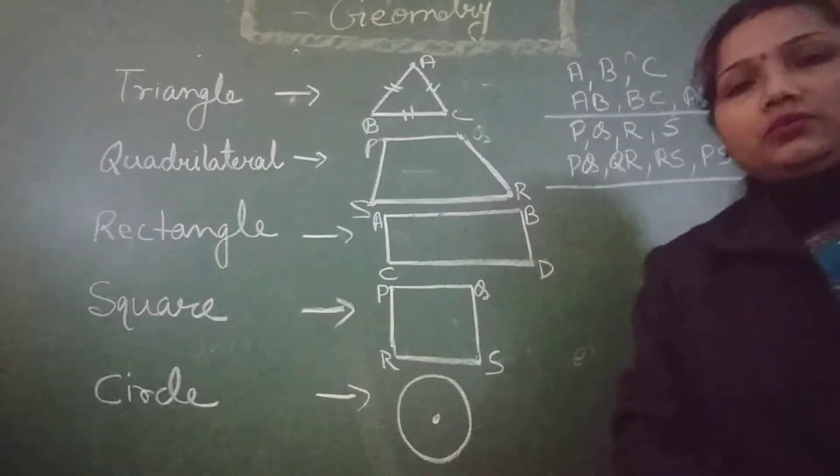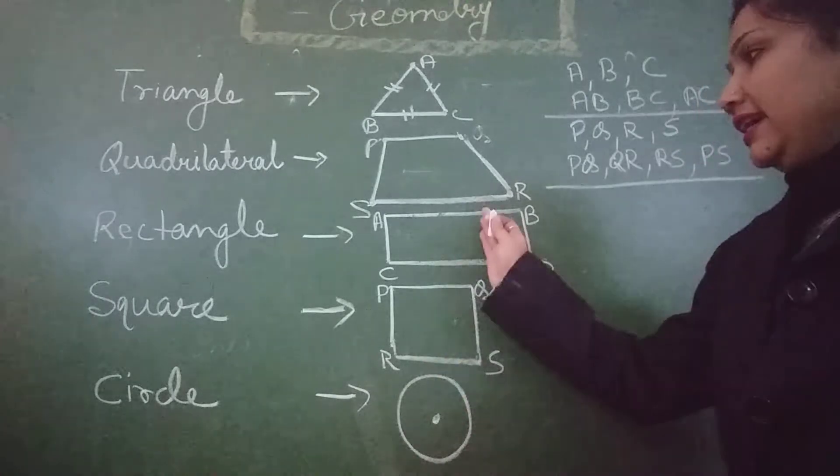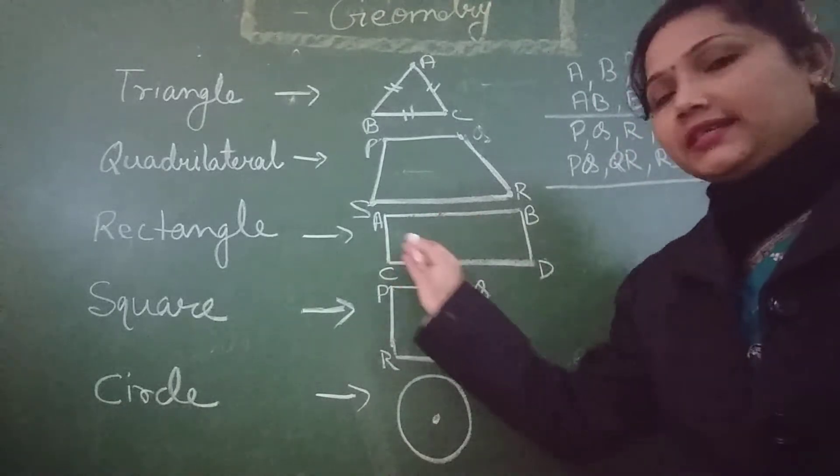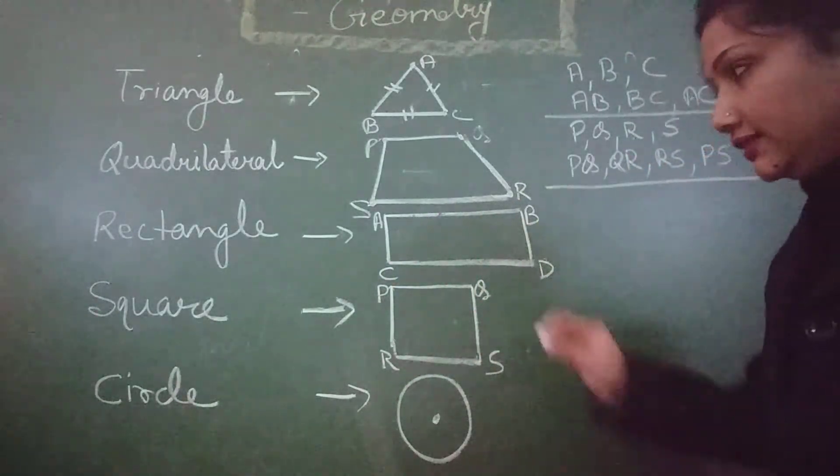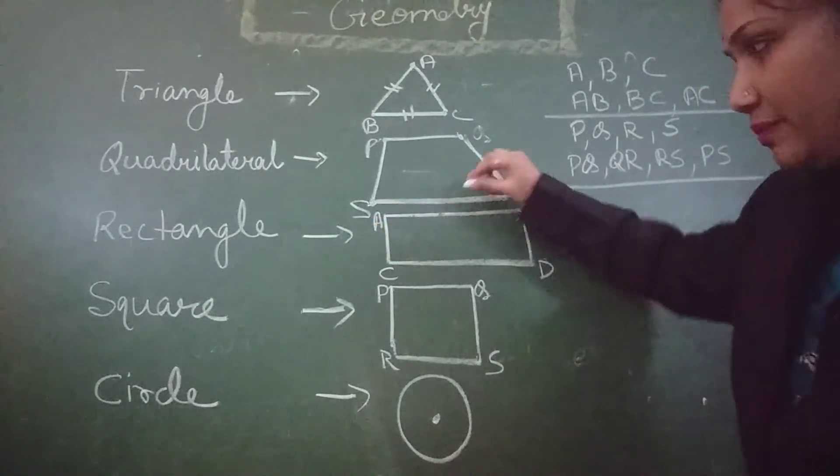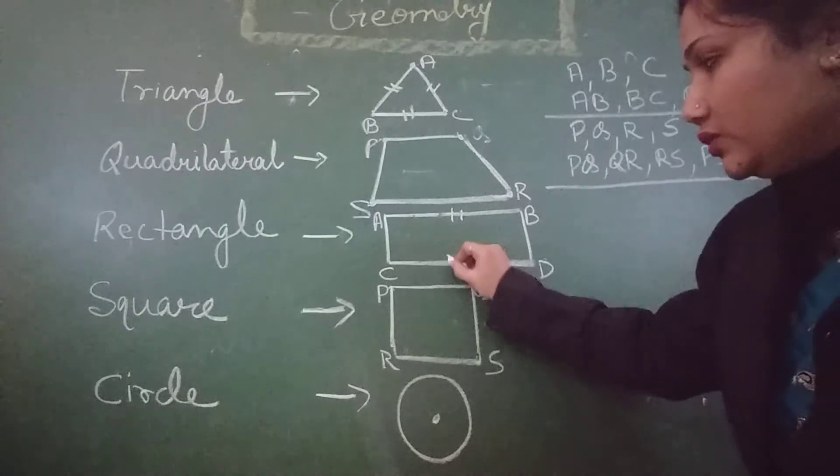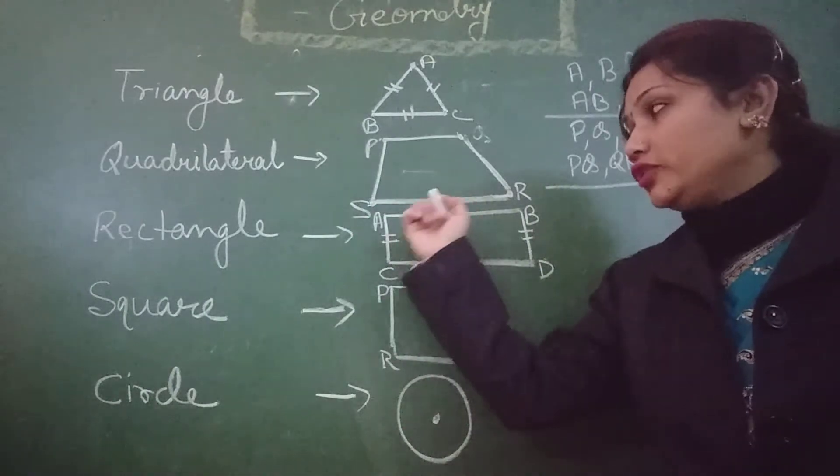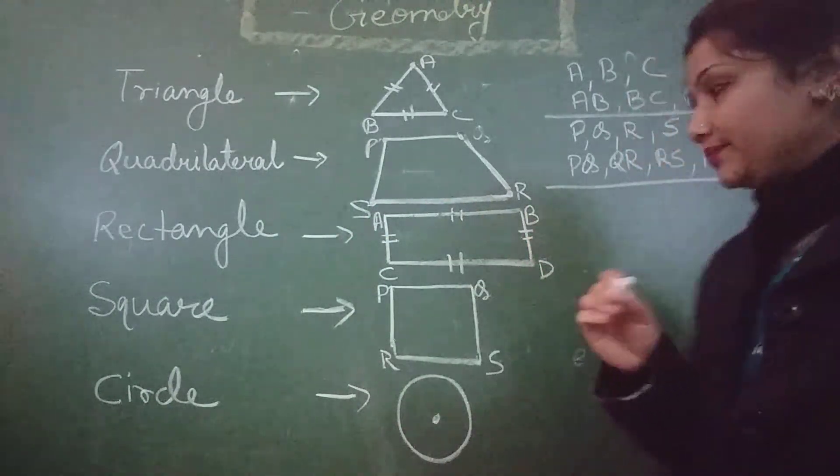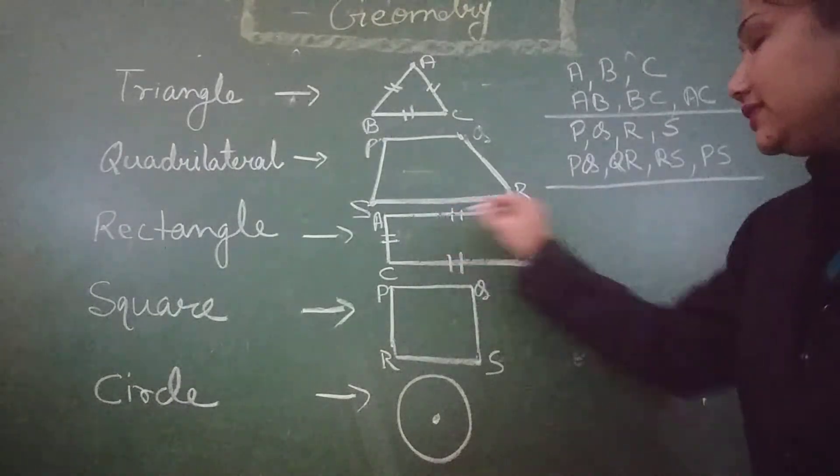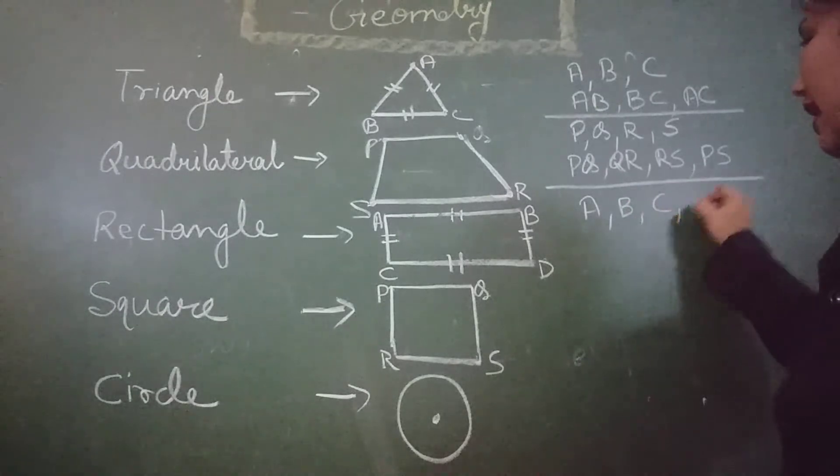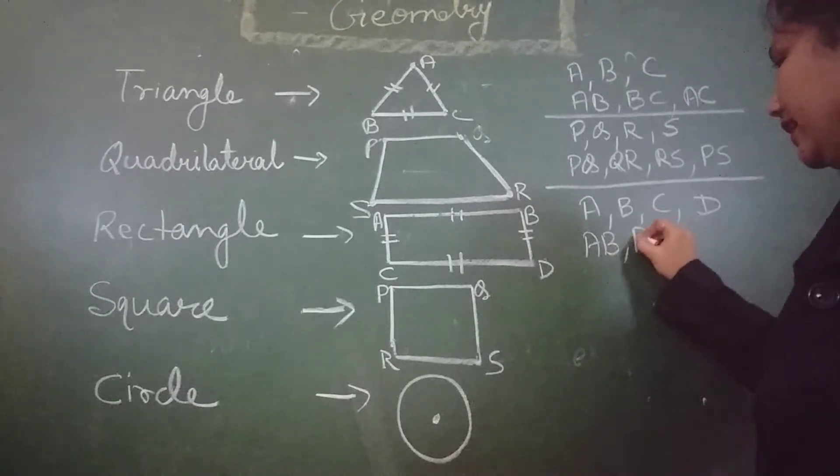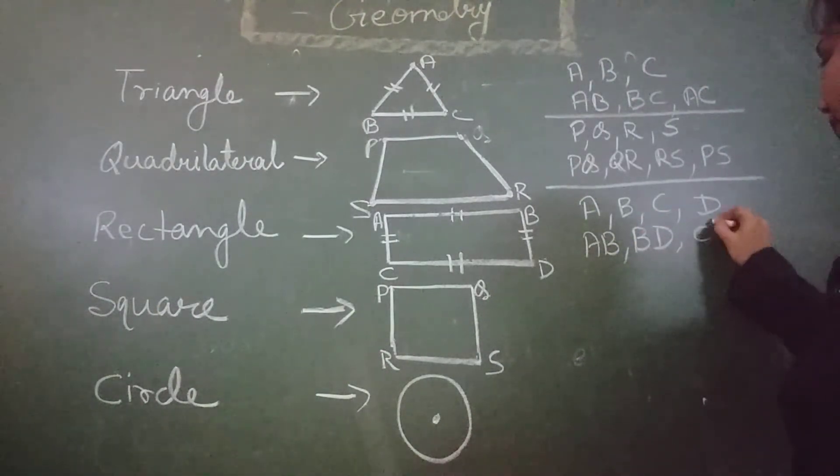Now, rectangle. Rectangle is also a quadrilateral. Because it has four sides. But in case of rectangle, two opposite sides are equal to each other. Means, this AB is equal to CD and AC is equal to BD. It has also four sides and four corners. And in case of rectangle, these vertices are A, B, C and D. And the sides are AB, BD, CD and AC.